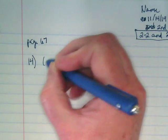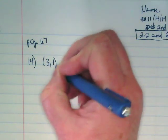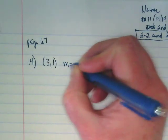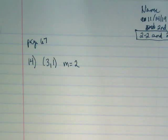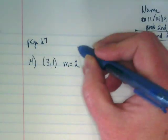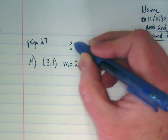And we are given 3,1 and m is equal to 2. What do you think that I'd like to see you write above this before we start? Let's write the form.